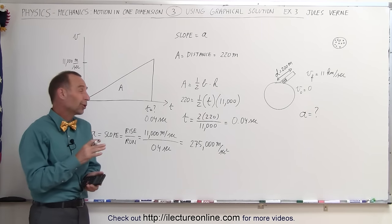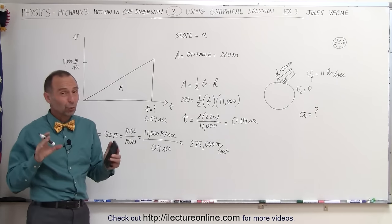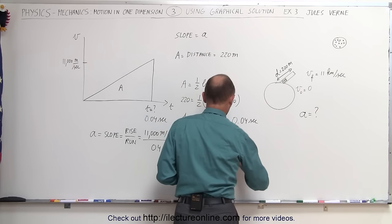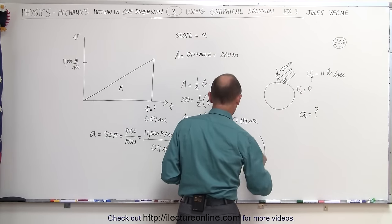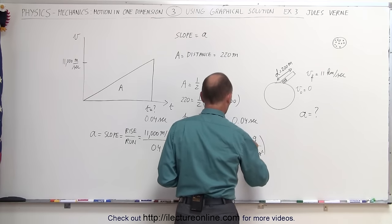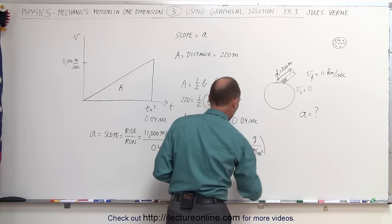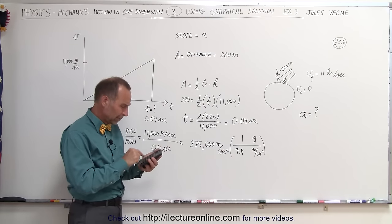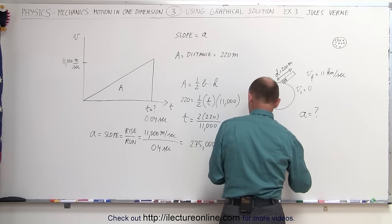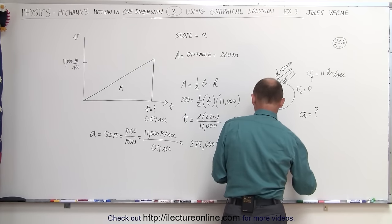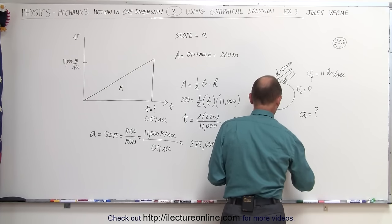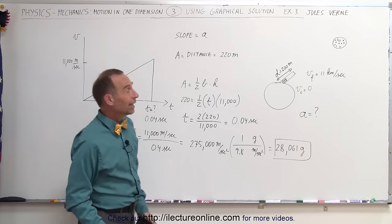People can only withstand a maximum of 20 g's for a very short period. Let's convert that to g's. Multiply by the ratio: g's at the top, meters per second squared at the bottom. 1g is 9.8 meters per second squared. Dividing by 9.8, we get 28,061 g's, which is way more than 20.